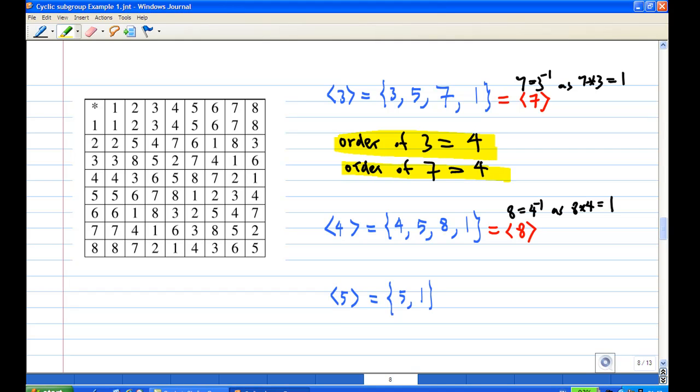Now let's look at the cyclic subgroup generated by 4: 4, 5, 8, 1. There are 4 elements there, so the order of 4 is equal to 4. This cyclic subgroup is the same as the cyclic subgroup generated by 8, so the order of 8 is also 4.